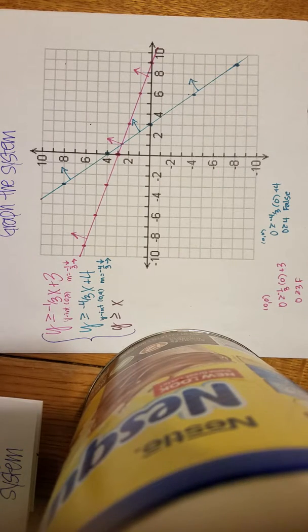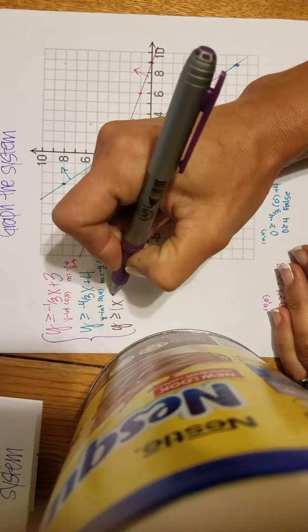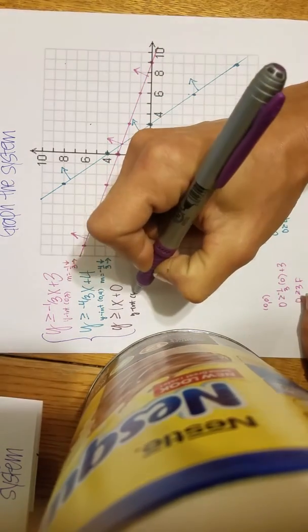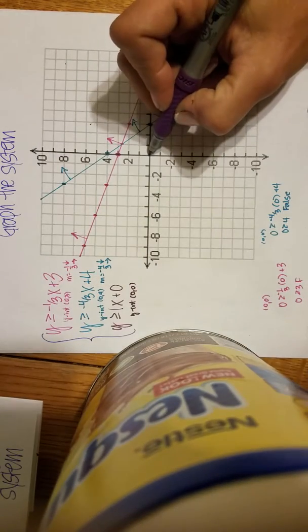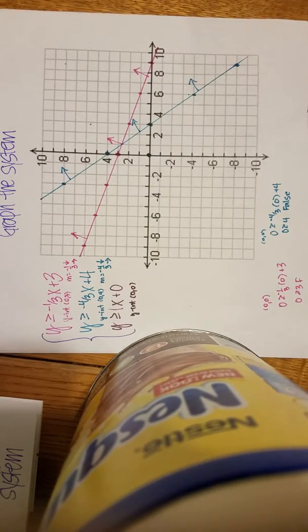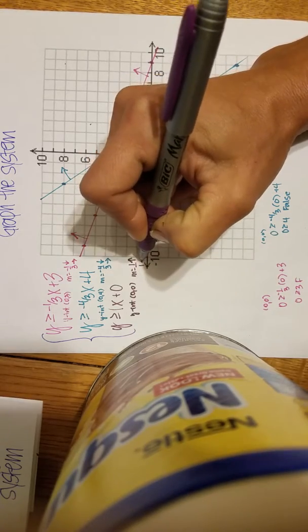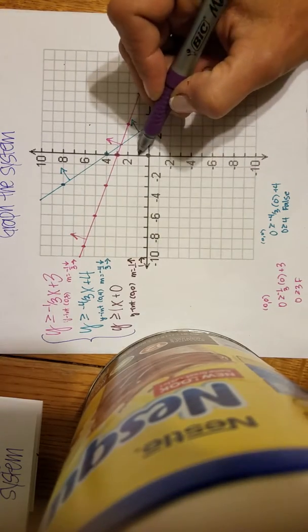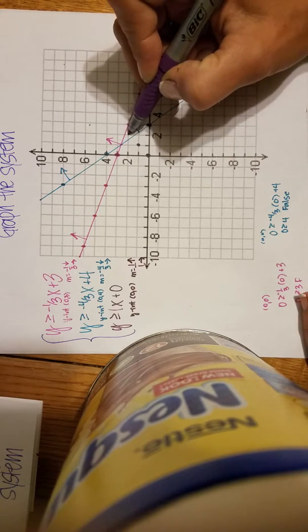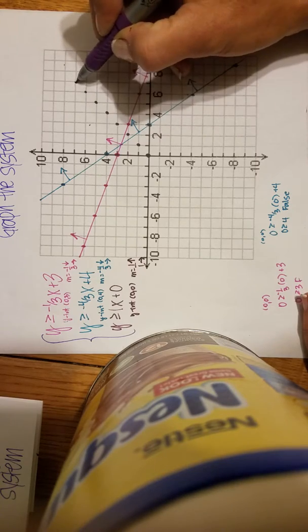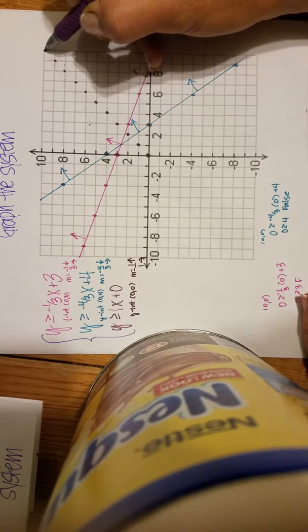Now my next and final inequality is Y is greater than or equal to X. It doesn't say Y is greater than or equal to one X plus zero, but you could assume that. Therefore, the Y intercept is the origin, zero, zero. So I put my first dot of the purple line at the origin. And then the slope is one over one. So from my Y intercept, my pattern will be up one, right one. Actually, from any point on this line, the pattern is going to be up one, right one. So I want to follow this pattern all the way to the edge.